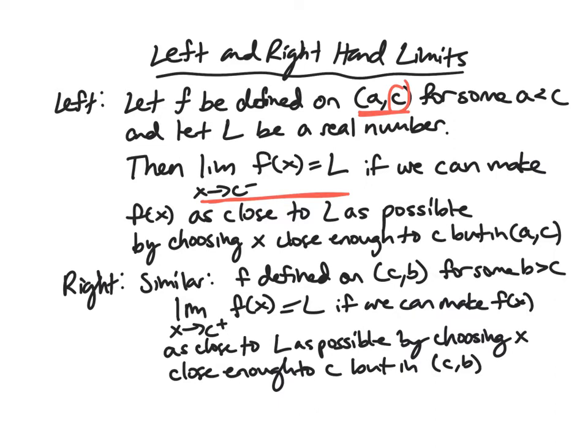It's an open interval here, again, because we only care about near your point, but not at your point. Our notation in this case is a little plus, showing we're coming from the positive side. The minus was from the negative side,